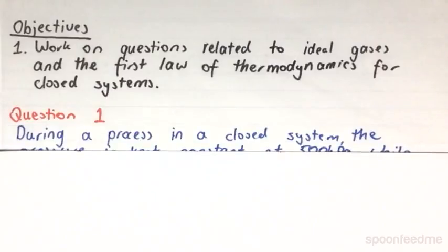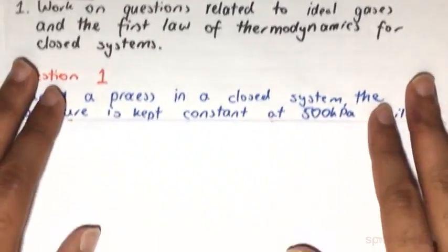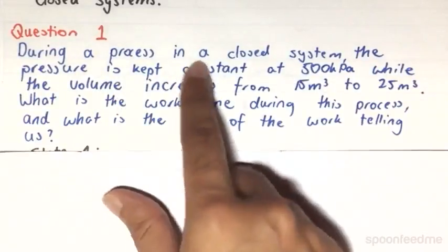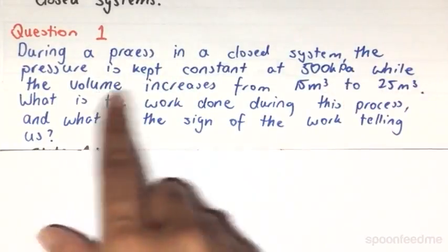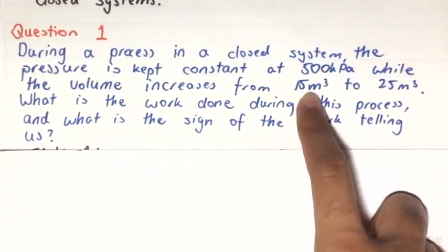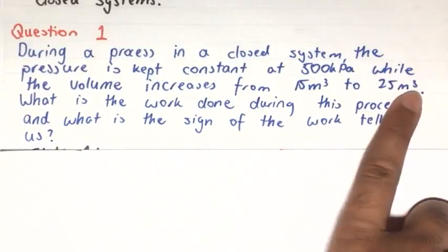So our question that we will start off with will be a very simple question. What it says is that during a process in a closed system, the pressure is kept constant at 500 kilopascals, while the volume increases from 15m3 to 25m3.